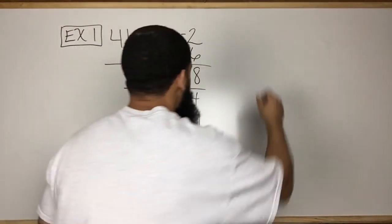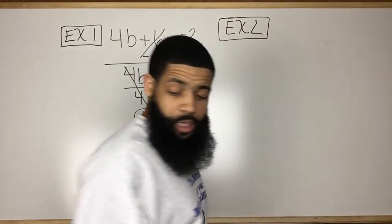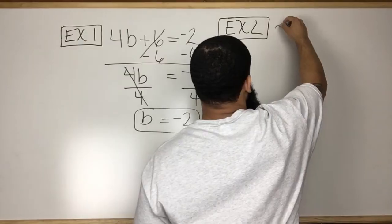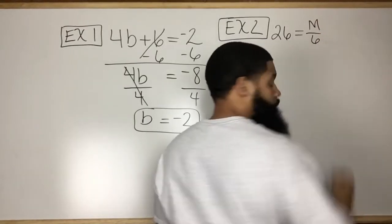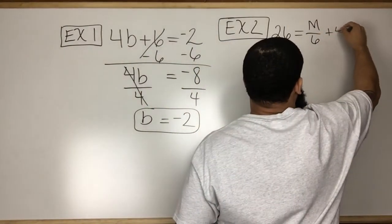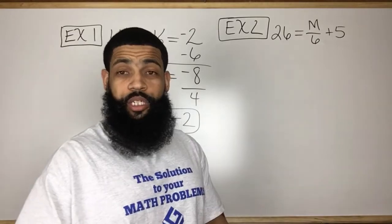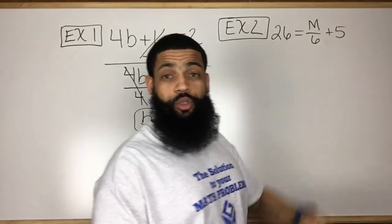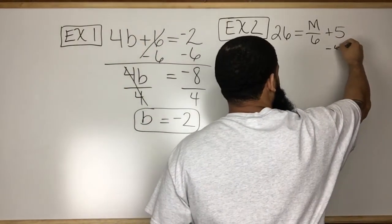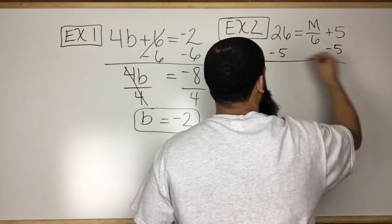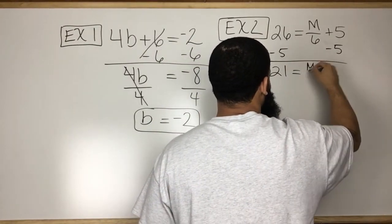Example 2, we're going to do 26 is equal to m over 6 plus 5. In this case, notice we have a fraction. But once again, we need to get rid of the plus 5 first. So we're going to subtract 5 from both sides. And when I say both sides, I mean both sides of the equal sign. So minus 5 here, minus 5 here. 26 minus 5 is 21. 21 equals m over 6.